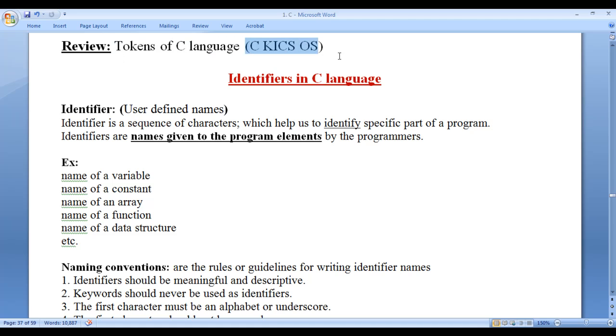I told you to remember this shortcut which helps you remember tokens of C language easily: C KICS OS. C for comments, K for keywords and data types, I for identifiers, C for constants and variables, S for strings and characters, O for operators, S for separators. We already discussed comments, keywords, and data types. In this video tutorial, I would like to discuss identifiers in C language.